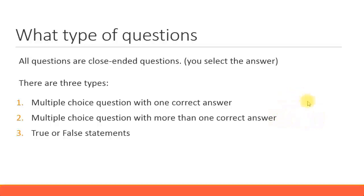Then there are multiple choice questions with more than one correct answer. This is trickier because there will be one question with perhaps five answers, and two, three, or even four of them can be correct. It's unlikely that all will be correct — most likely it will be between two to four correct answers.